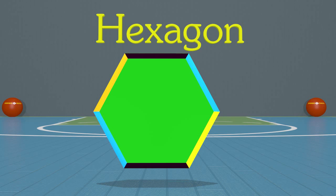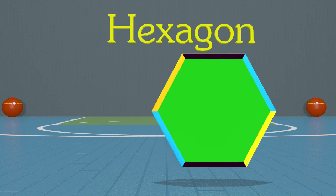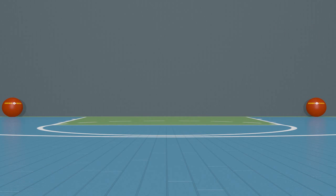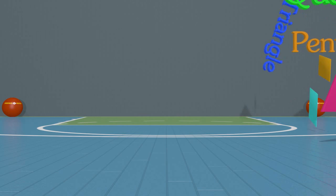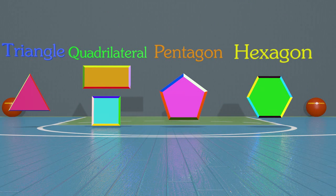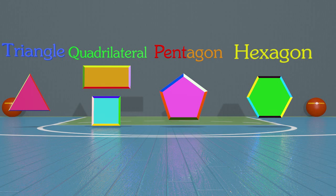Great job again — you guys are awesome! But how are we going to remember all these shape names? We've learned so many. Let's make a list to help us remember everything. We have a triangle, quadrilateral, pentagon, and a hexagon. 'Tri' means three — that's why a triangle has three sides and three angles. The word 'quad' means four — that's why a quadrilateral has four sides and four angles. 'Pent' means five, which is why a pentagon has five sides and five angles.